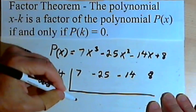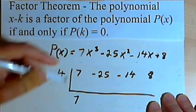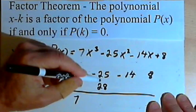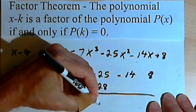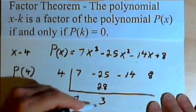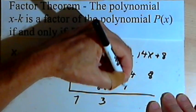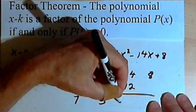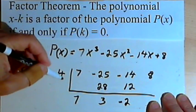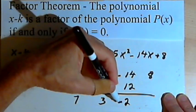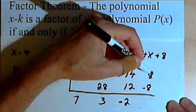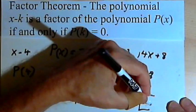So I'll bring down the 7, multiply 4 times that 7, that's 28, add negative 25 plus 28 is positive 3, multiply 4 times that 3, that's 12, add negative 14 and 12, that's negative 2, and then multiply 4 times negative 2, that's negative 8. When I add 8 and negative 8, I get a remainder of zero.